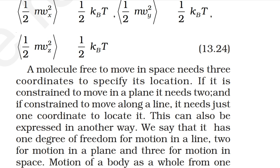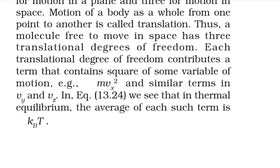This can be expressed as: a molecule has one degree of freedom for motion in a line, two for motion in a plane, and three for motion in space. Motion of a body as a whole from one point to another is called translation. A molecule free to move in space has three translational degrees of freedom. Each translational degree of freedom contributes a term containing the square of some variable of motion, such as ½mvx², and in thermal equilibrium the average of each such term is ½kBT.